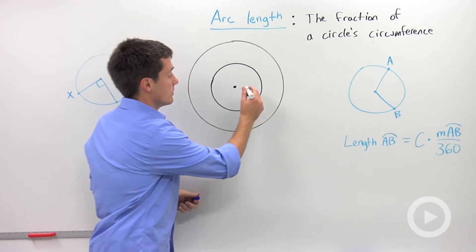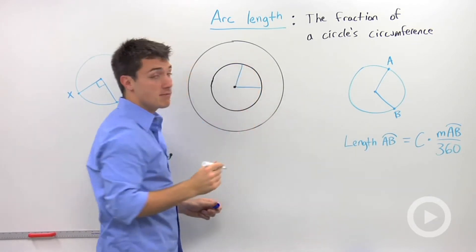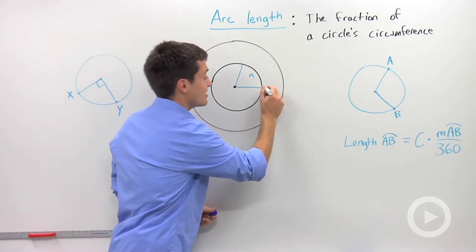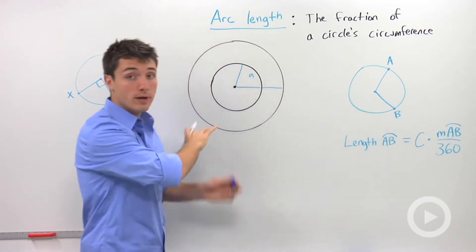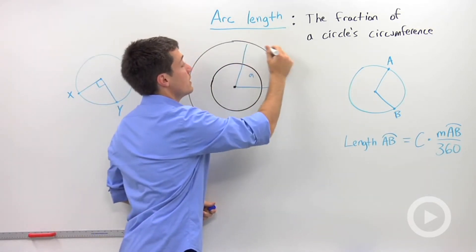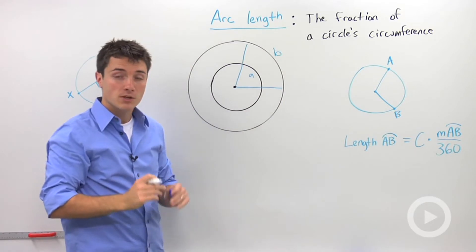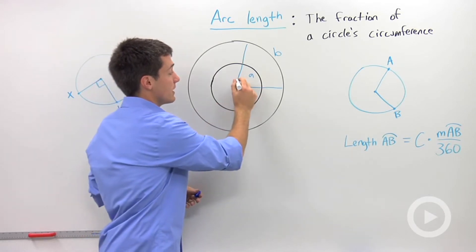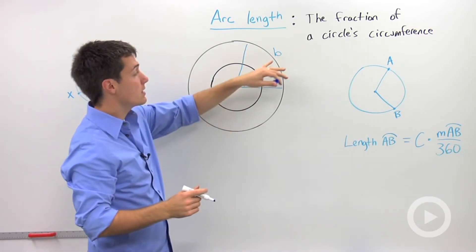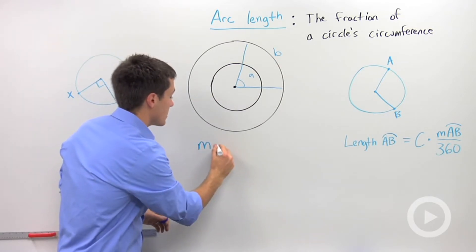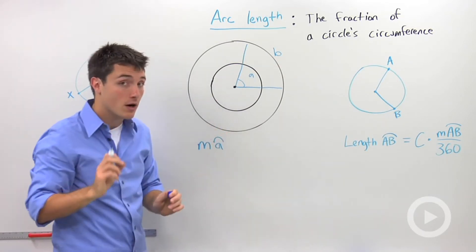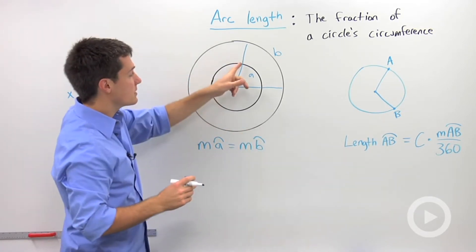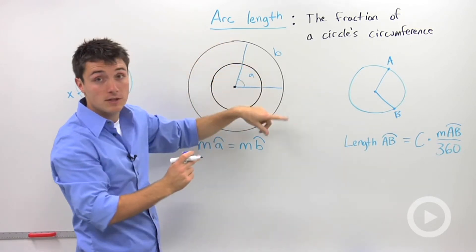Let's say I drew in two radii in the smaller circle, and I called that intercepted arc, arc A. Let's say I extended those radii all the way out to the larger circle, and I'm going to call that arc B. So we're trying to compare arc measure with arc length. Since arc A and arc B have the same central angle, I can say that the arc measure of A is equal to the arc measure of B.